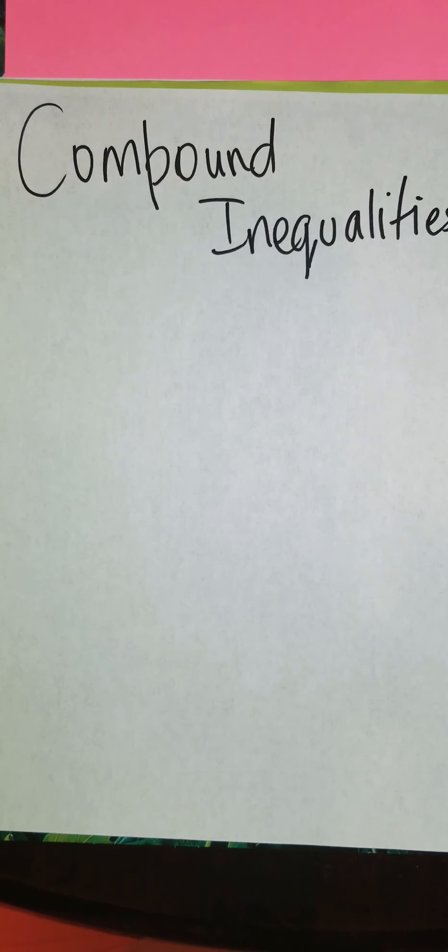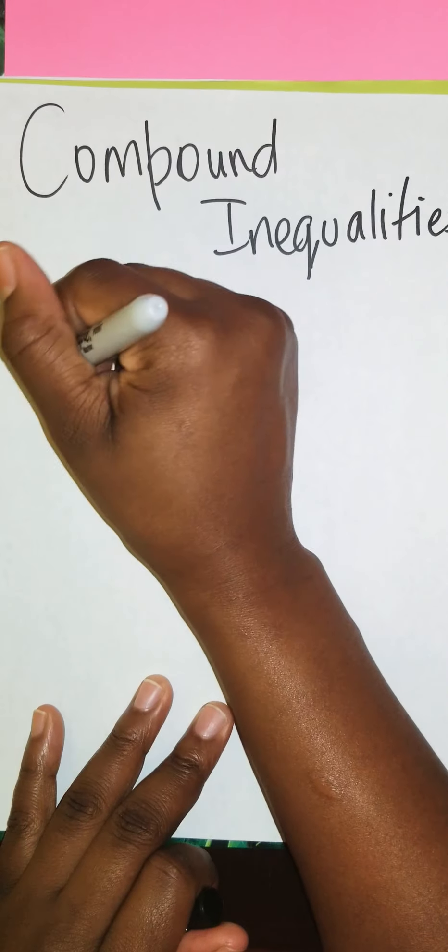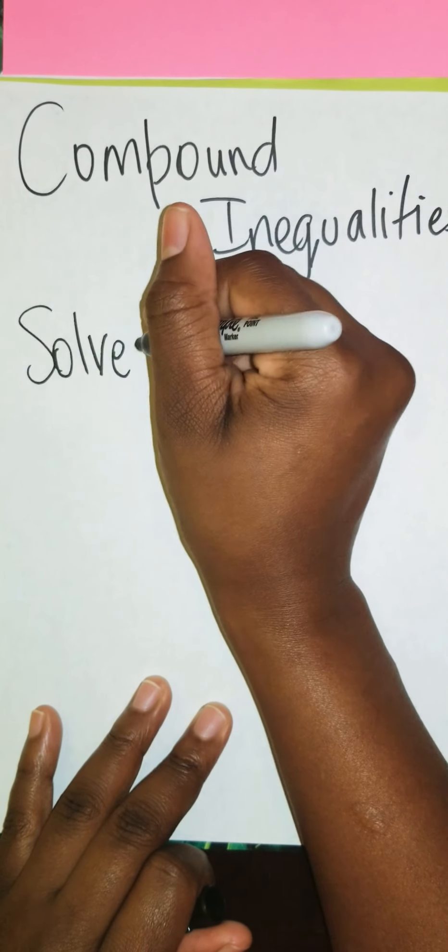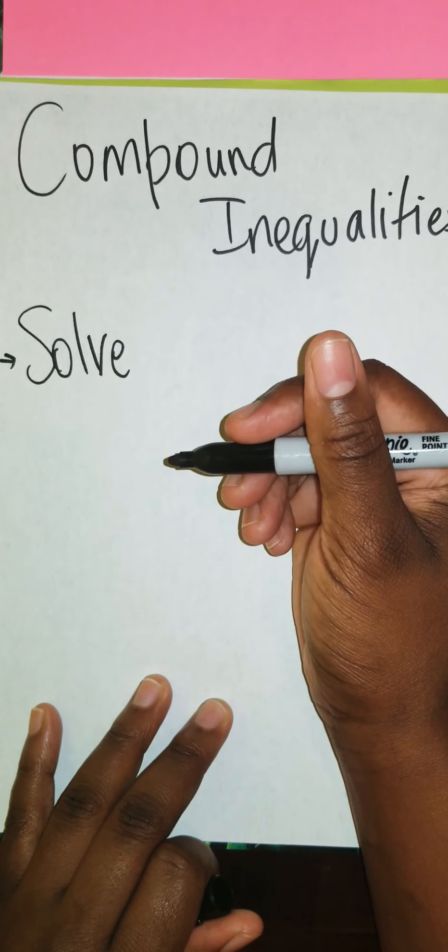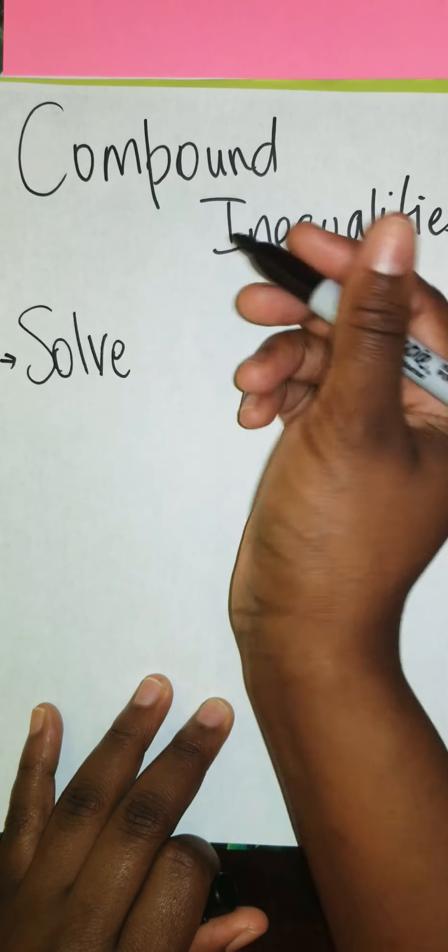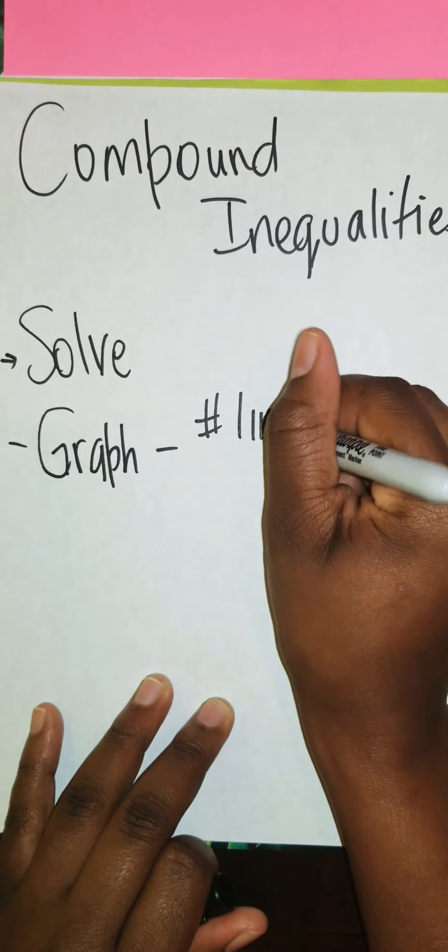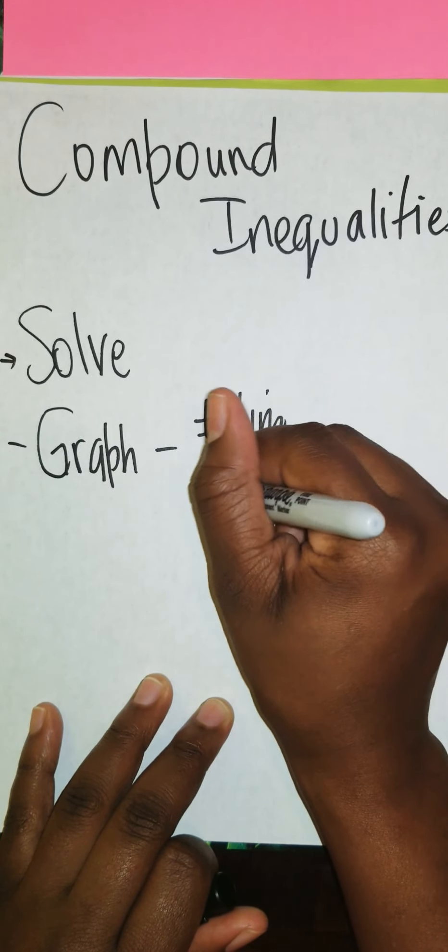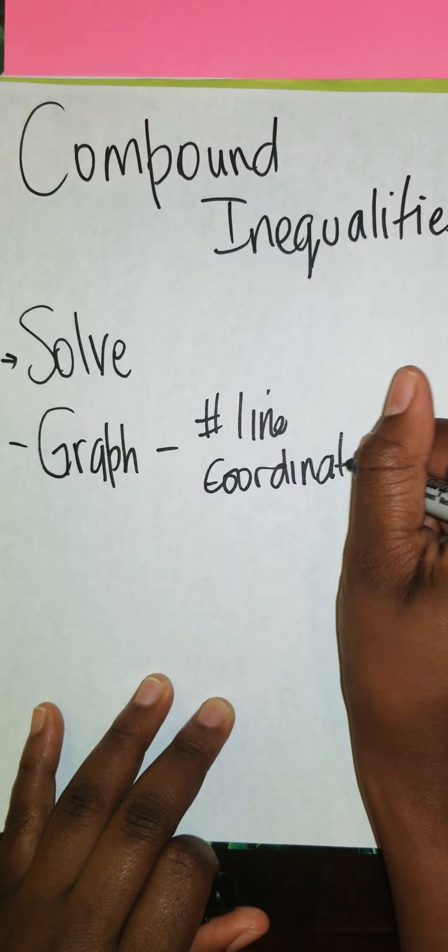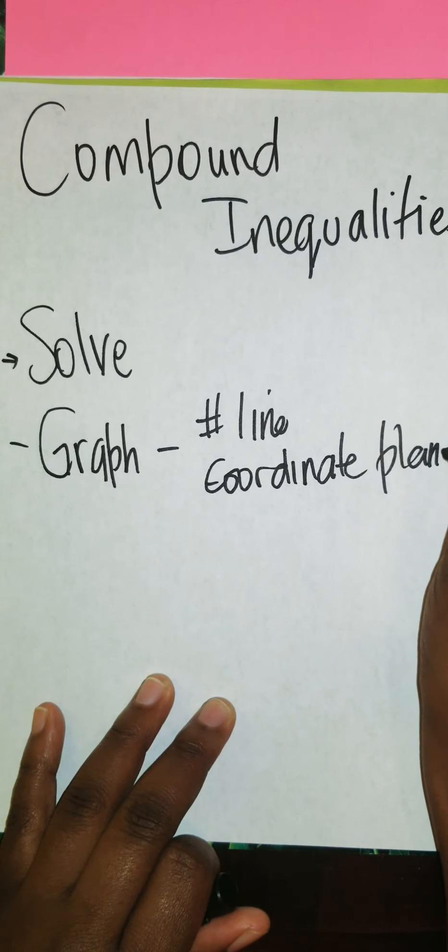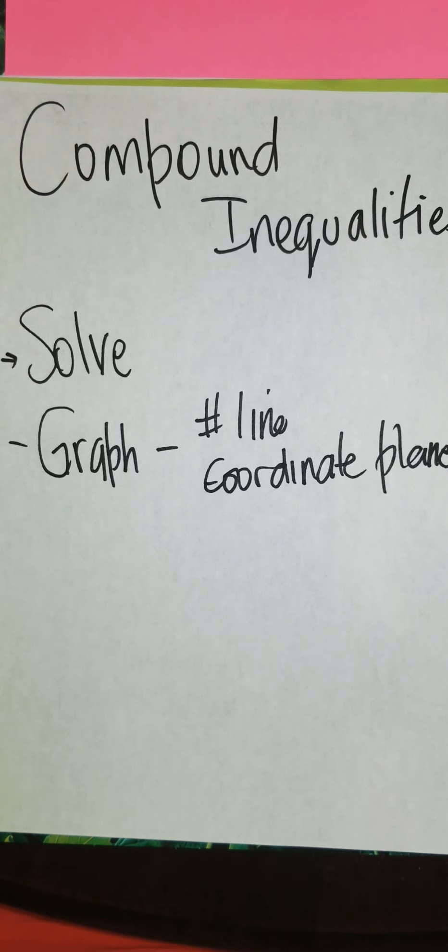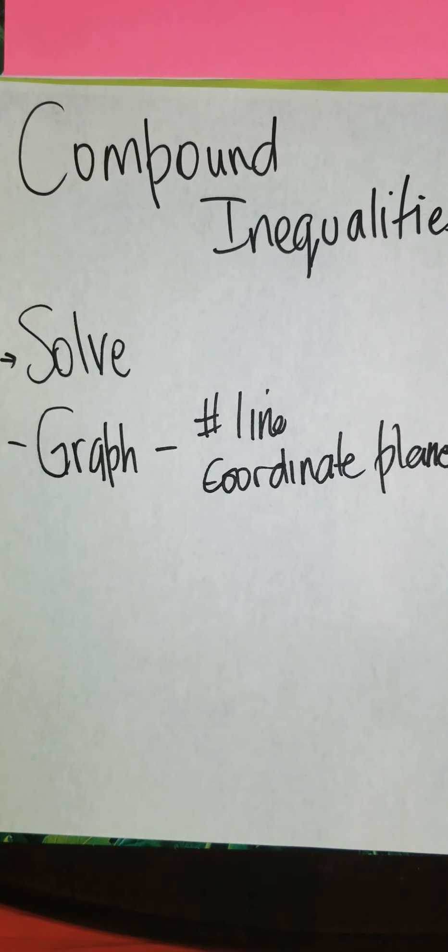With compound inequalities, we have two smaller inequalities joining together to form one inequality. Normally with compound inequalities, you're either being asked to solve, they can ask you to graph it, and when I say graph it, it can be on a number line or it can be on a coordinate plane, or to write the interval.